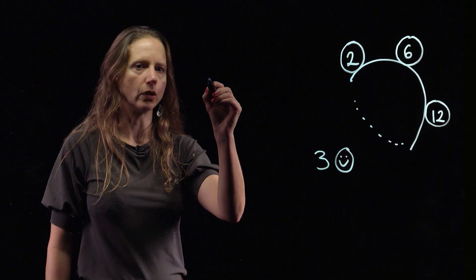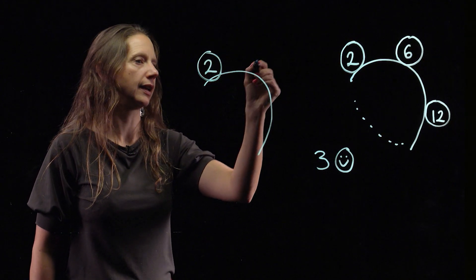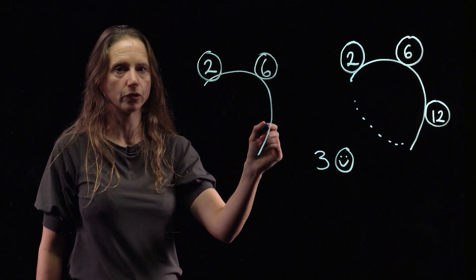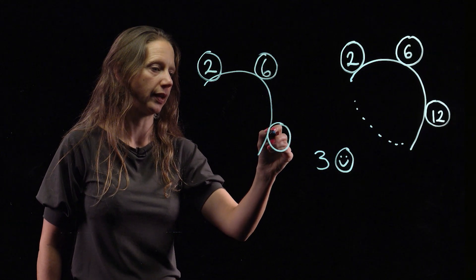But what if I didn't want to stop there? If I didn't want to stop there, I can have two and six, and we've just seen I can't put a multiple of six there, because then it would be a multiple of two as well, so we'll put a factor of six.